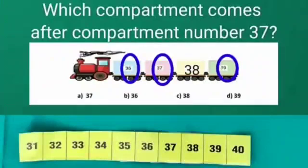Let's read options. Option A is 37 which is not correct. Option B is 36 which is not correct. Option C is 38 which is correct. So we will put tick on it. Our option D is 39 which is not correct. So our correct option is option C.